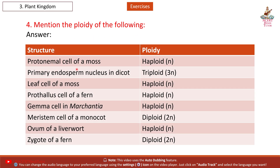Protonema cell of a moss — haploid (N). Primary endosperm nucleus in dicot — triploid (3N). Leaf cell of a moss — haploid (N). Prothallus cell of a fern — haploid (N). Gemma cell in Marchantia — haploid (N). Meristem cell of a monocot — diploid (2N). Ovum of a liverwort — haploid (N). Zygote of a fern — diploid (2N).